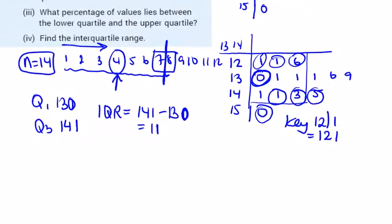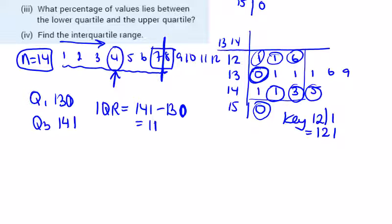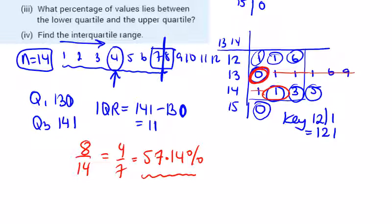Be careful: what percentage of values lie between the upper quartile and lower quartile? So we circle between lower and upper. We've got 1, 2, 3, 4, 5, 6, 7, and 8. So 8 out of 14, which is 4 over 7, which is just over 57.14%. I'll leave that to two decimals since we're not asked to round.